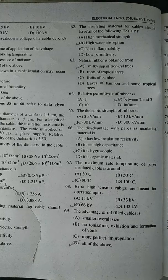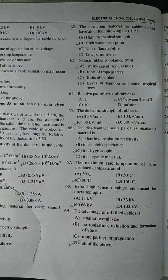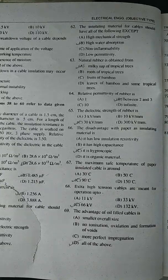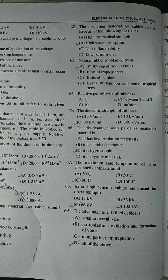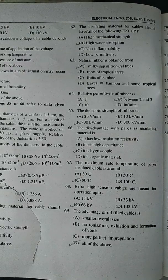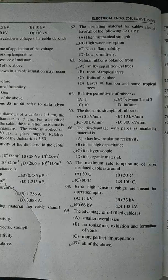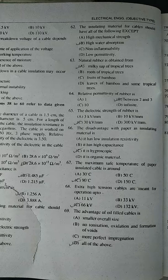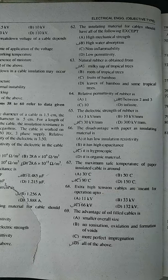63. Natural rubber is obtained from the milking sap of tropical trees. 64. Relative permittivity of rubber is between 2 and 3. The dielectric strength of rubber is 30 kilovolts per mm.